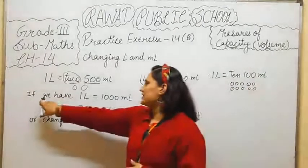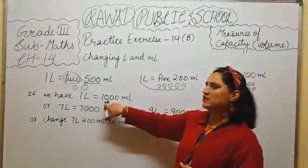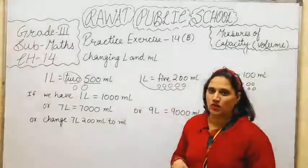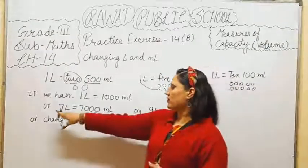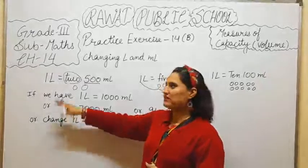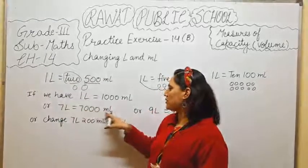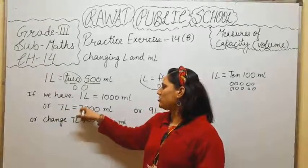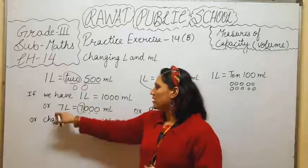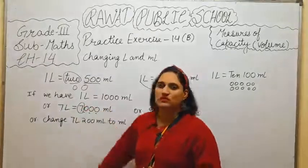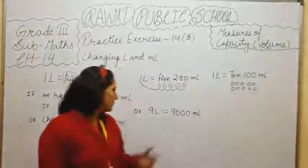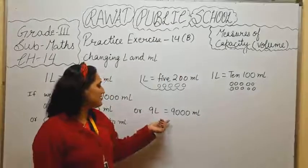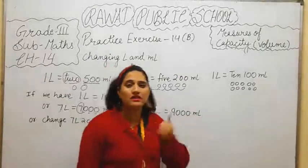If I say we have one liter equals 1000 ml as we already learned about it, or we say 7 liter I have, it converted into 7000 ml. Zero placing will be the same and the number will be changed over here. 7 liter converted into 7000 ml, or 9 liter equals 9000 ml.